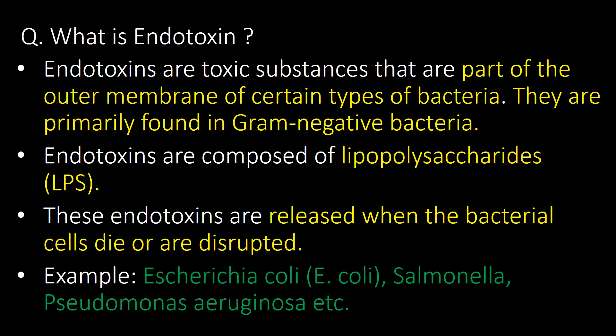We will start with a very basic question: what is endotoxin? Endotoxins are toxic substances that are part of the outer membrane of certain types of bacteria. They are primarily found in gram-negative bacteria. Endotoxins are composed of lipopolysaccharides — LPS is the commonly used short form. These endotoxins are released when the bacterial cells die or are disrupted or broken.